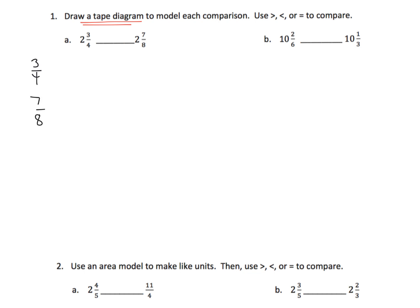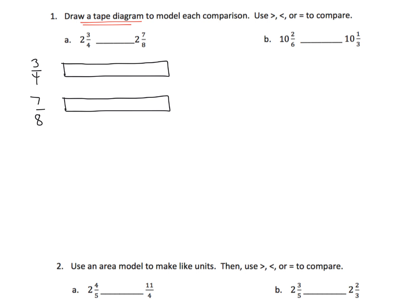You have to draw an identical tape diagram for both fractions. I tend to start with the fraction that has the smaller denominator, which means it's going to have the larger pieces. Fourths are larger than eighths, so I always draw the fraction with the larger pieces first. And there's my three-fourths.